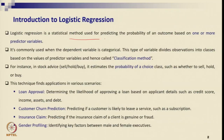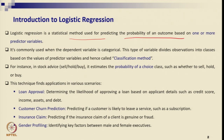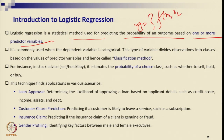Logistic regression is a statistical method used for predicting the probability of an outcome based on one or more predictor variables. Here we do not calculate the actual value of y — instead we calculate the probability of the outcome. Therefore we call it a classification method, where the outcome variables are categorical. The dependent variable is generally a categorical variable which we calculate through logistic regression.